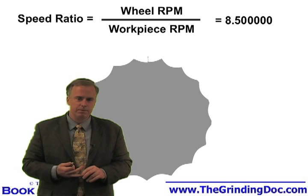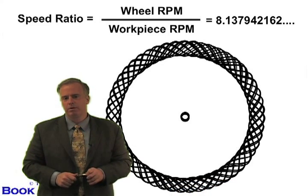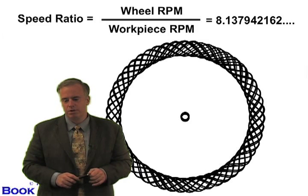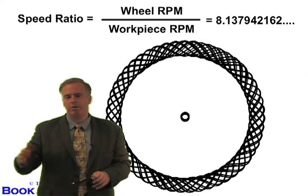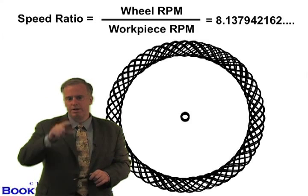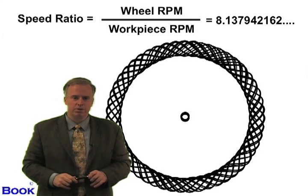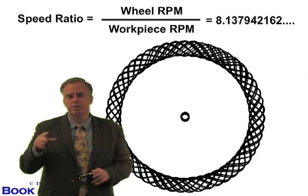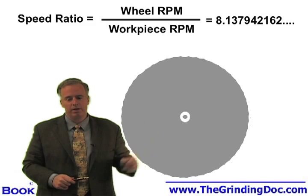The best option is to take your wheel RPM divided by your workpiece RPM and choose an irrational value — a value that cannot be represented as a fraction. Something like 8.7265349... going on and on, so that whenever the wheel comes around again, it never starts in the same place. The wheel, which is imperfectly shaped, somewhat eccentric, maybe with a little imbalance, obliterates all the previous waves. And what you're left with is a workpiece that looks something like that.